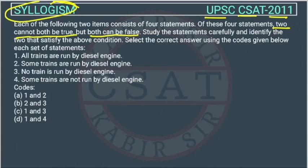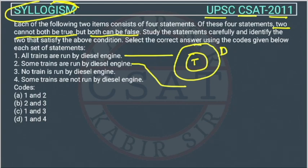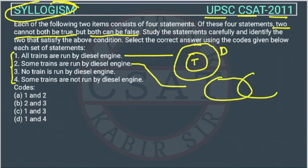The first statement is: 'All trains are run by diesel engine.' So this is the Venn diagram for that — diesel will be outside the train circle. We draw the Venn diagram separately for all four statements. The second statement is: 'Some trains are run by diesel engine.'